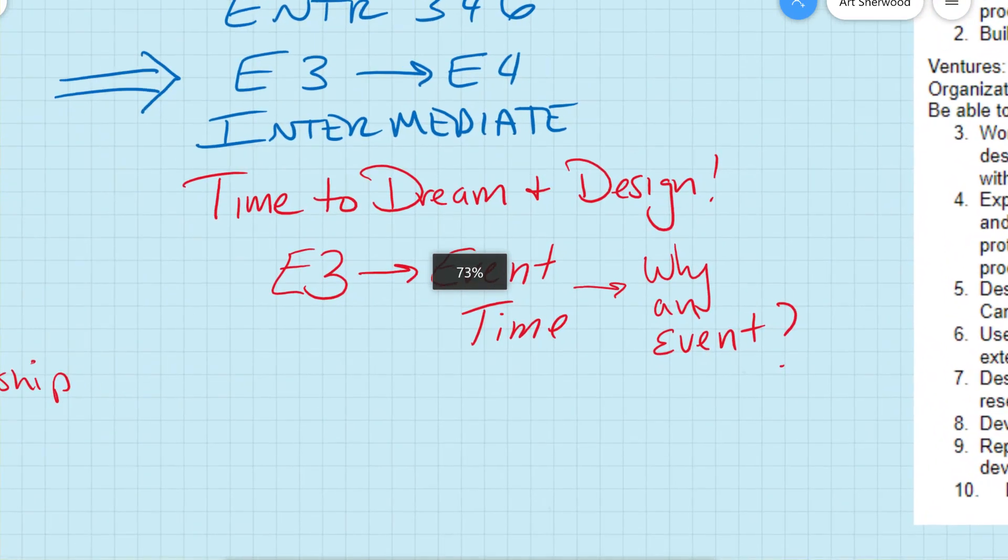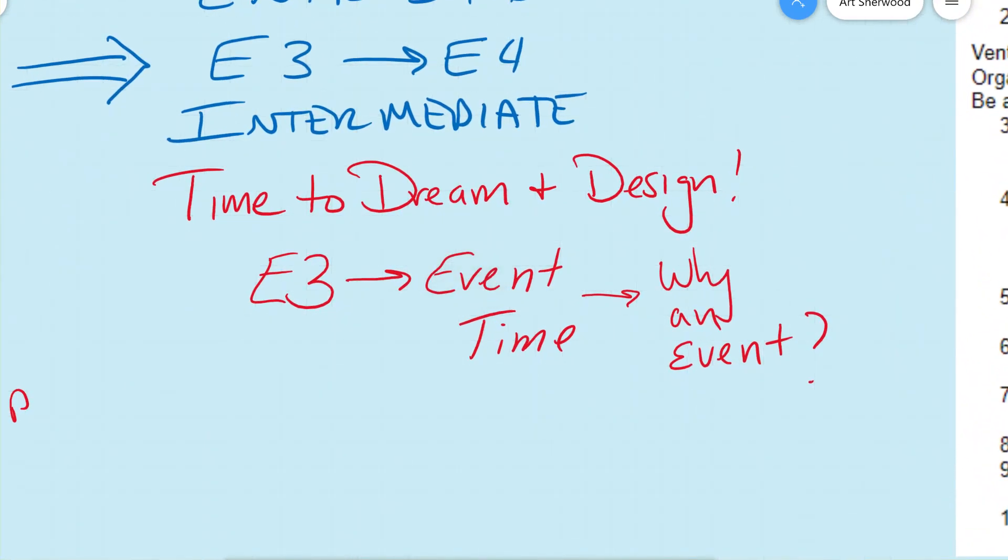E3 is really a time to dream and design. Like what could this be in terms of an event? And the idea is that you'd be partnering with a local entity who could then be a partner for you to run an event for them. And an example of that would be that you're working with a local nonprofit and that you run a fundraising event during that quarter. So you work with a partner, you design it, and you ultimately implement it.